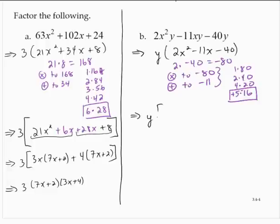So I'd have y times 2x squared plus 5x minus 16x minus 40. Using grouping,